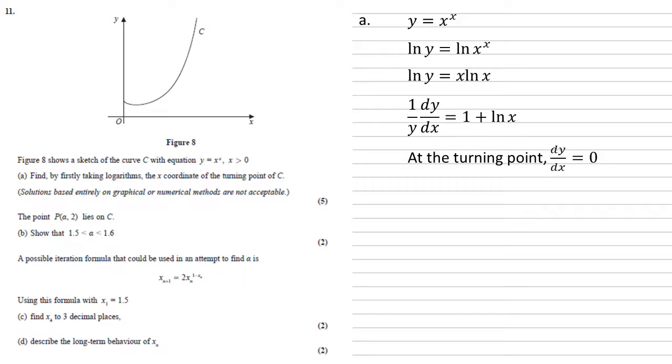We want the turning point, so we want dy by dx equals 0. Putting this in gives us 1 plus log natural x equals 0. So log natural x equals minus 1, and x equals e to the minus 1.